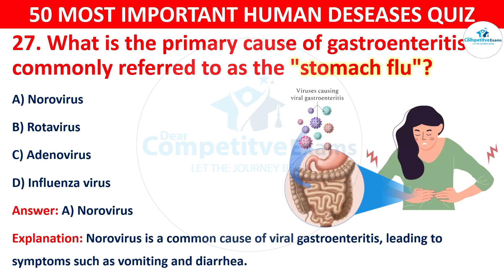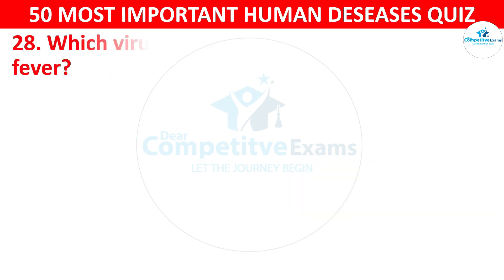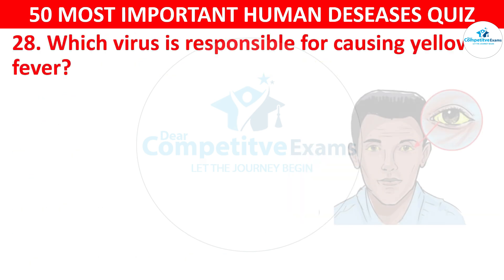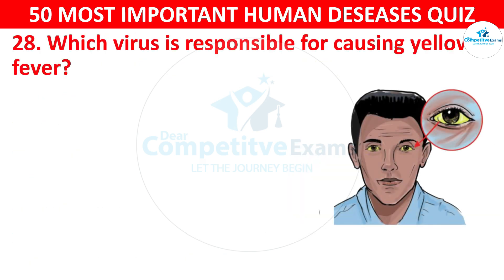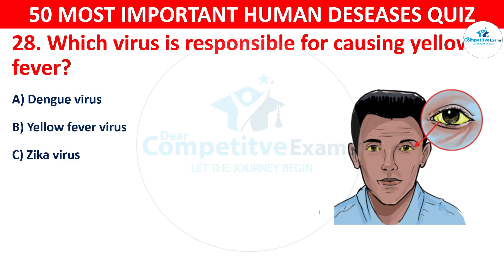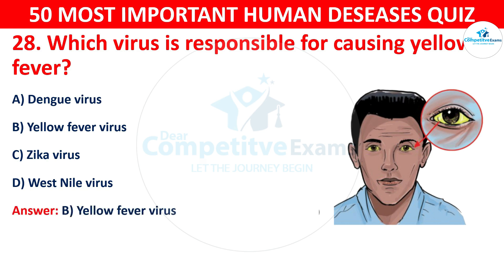Question 28: Which virus is responsible for causing yellow fever? Your options are: A) Dengue virus, B) Yellow fever virus, C) Zika virus, or D) West Nile virus. The correct answer is B — yellow fever virus. Yellow fever is caused by the yellow fever virus, transmitted through the bite of infected mosquitoes.